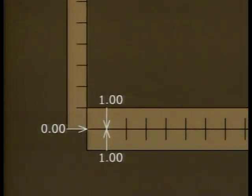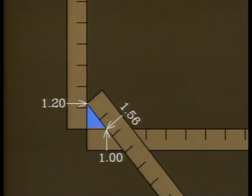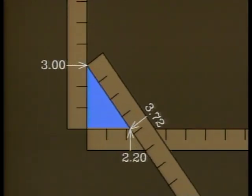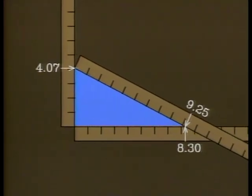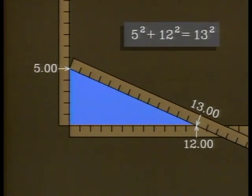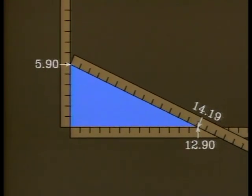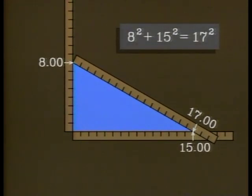When all three sides of a right triangle are integers — that is, whole numbers — they are said to form a Pythagorean triple. Here's one with 3, 4, and 5. And 5, 12, and 13. Another one: 8, 15, and 17. And there are many more.